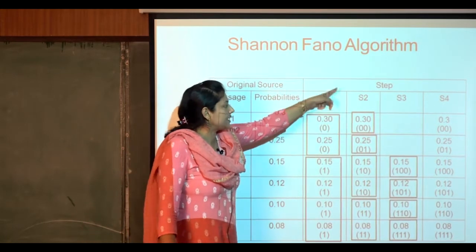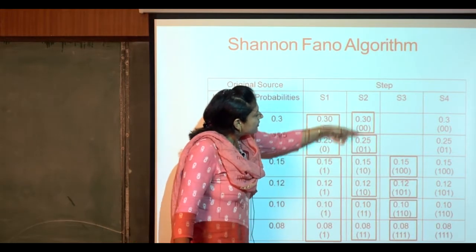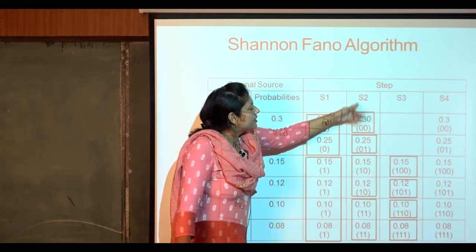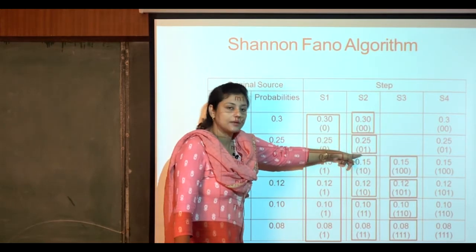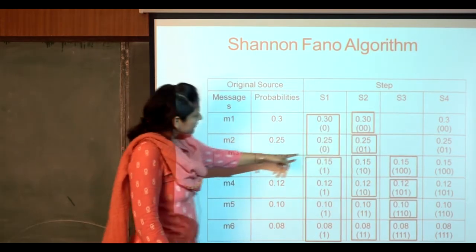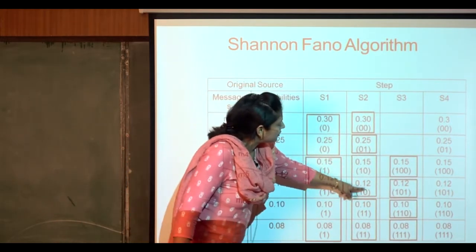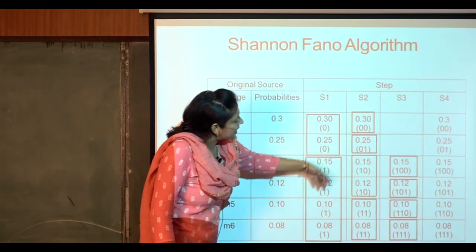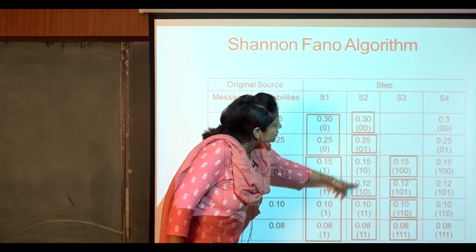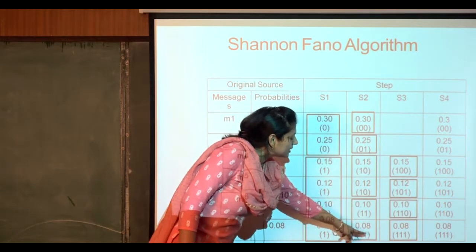Looking at the next reduced state S2, we examine the next column. Since 0.3 and 0.25 have already been encoded as 0, we put them as 0 0 in the next column because they're in the upper part. We put 1 1 in the next column for the lower half.